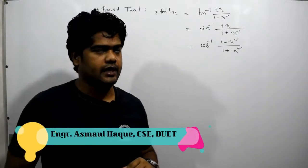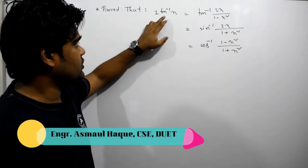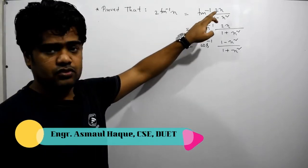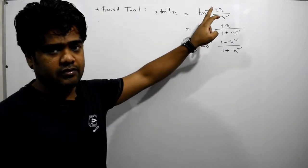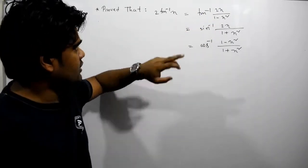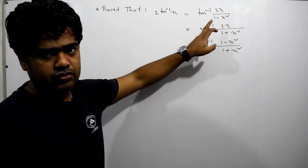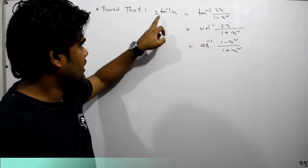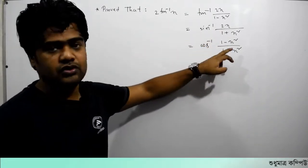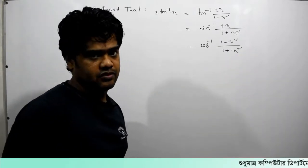Let's get started. Now we will see what we have done. 2 tan inverse x is equal to tan inverse 2x divided by 1 minus x squared. 2 tan inverse x is equal to sin inverse 2x divided by 1 plus x squared. 2 tan inverse x is equal to cos inverse 1 minus x squared divided by 1 plus x squared.